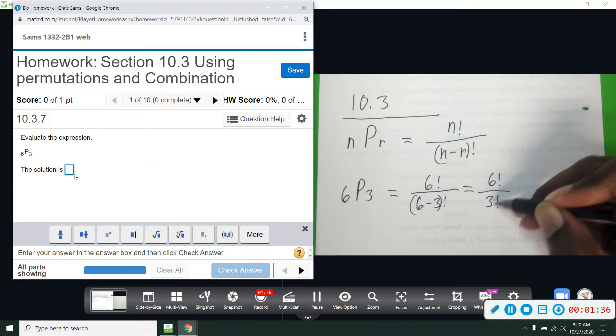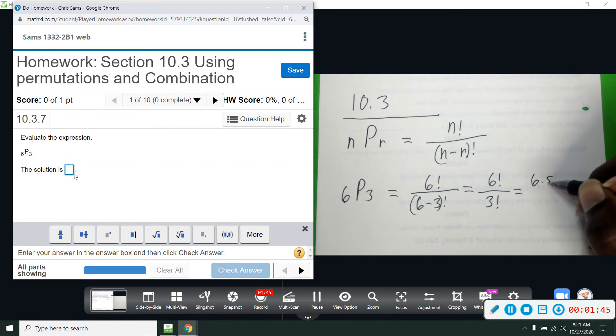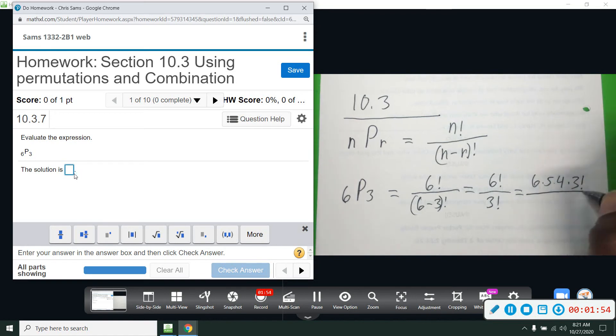Whatever the biggest number is on the bottom, you stop there on the top. I'm going to spell out 6 factorial: 6 times 5 times 4 times 3. I'll stop right there and say 3 factorial. On the bottom I already have 3 factorial, so they divide each other out, giving us 1. All we have to do is multiply 6 times 5 times 4, that's 30 times 4, which is 120.